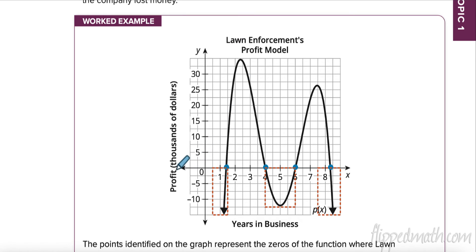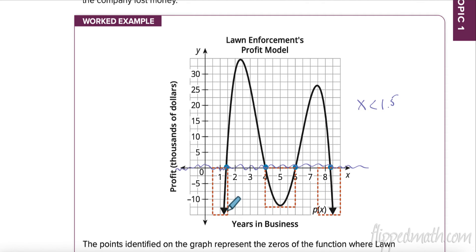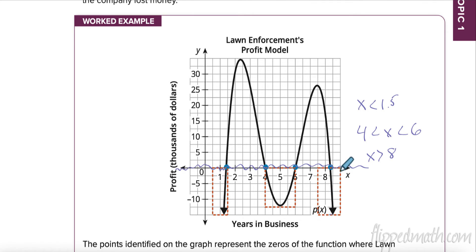Today we're going to talk about where in this profit model the profit is negative — where are we losing money? Losing money is anything that falls under zero. This part of the graph in this box is under zero, so that is x is less than 1.5. Before our first year and a half, we are going to be losing money. Then between years 4 and 6 we're going to lose money. And anything after year 8 — whenever x is greater than 8 — we're going to be losing money, because that's where our function is negative.